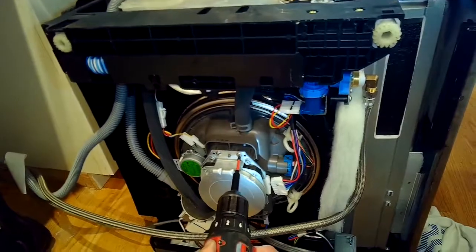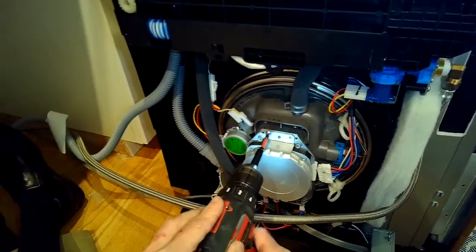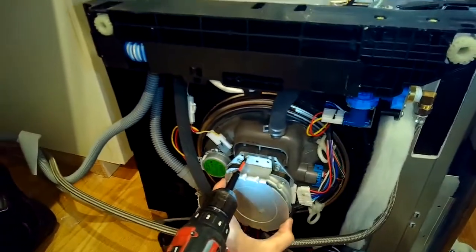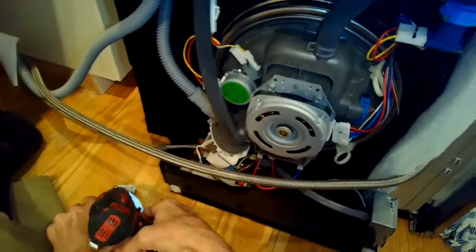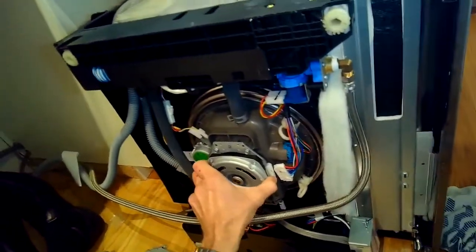And again, these motors are fairly inexpensive. So if your machine is not washing very well anymore because the motor's worn out or it's getting noisy, pretty easy and pretty cheap to replace these things. So you've got to get the protective plate off and then there's just those four screws holding it on.